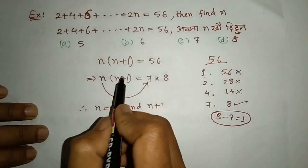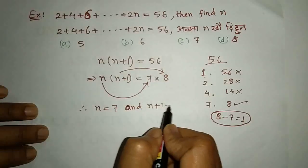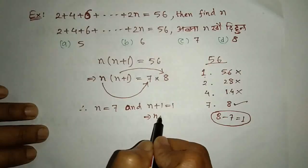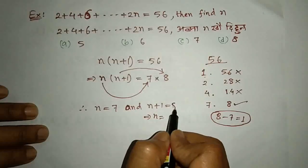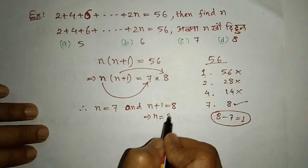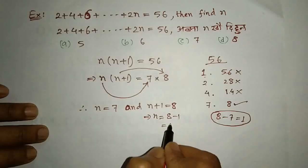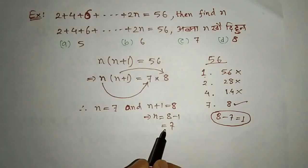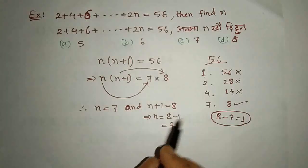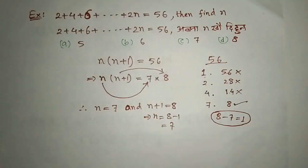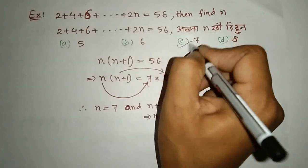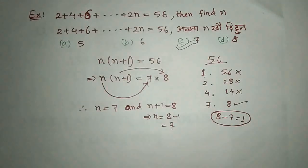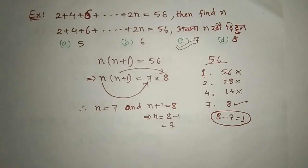That n plus 1 will be 1 plus 1 plus 1. Here we have 2n plus 1 minus 1. Then if we get 7, we find 7. This is a shortcut trick. This is a C number option. This is not a factorization.